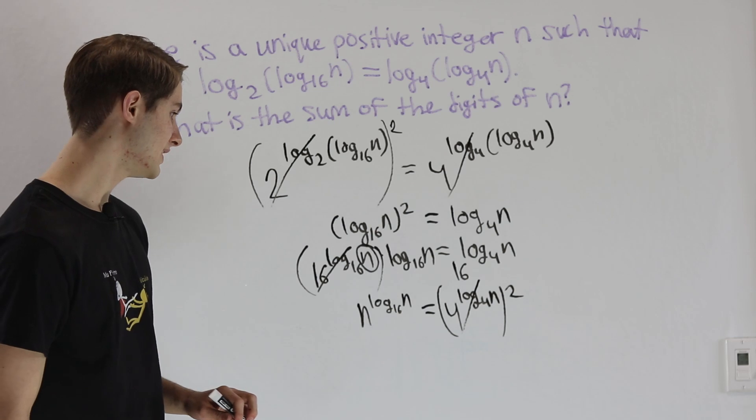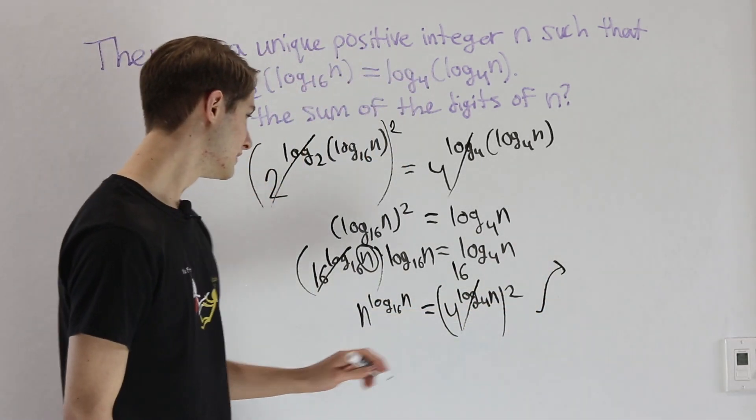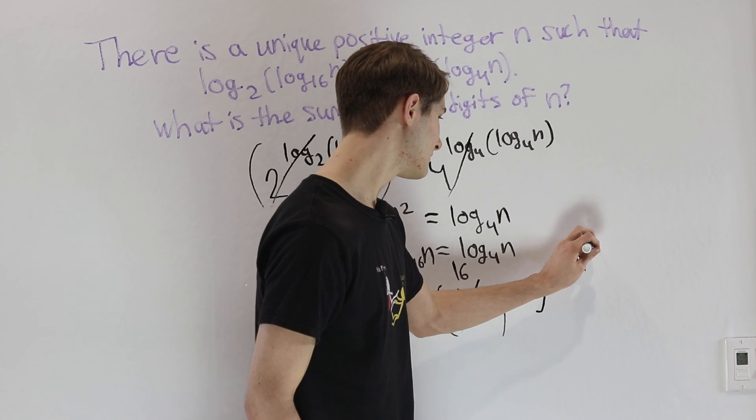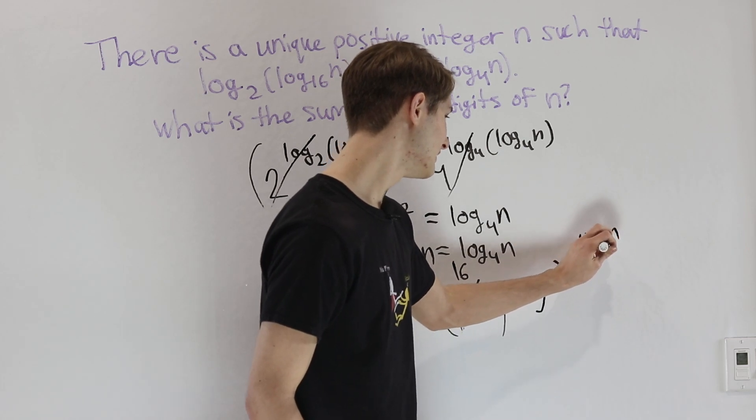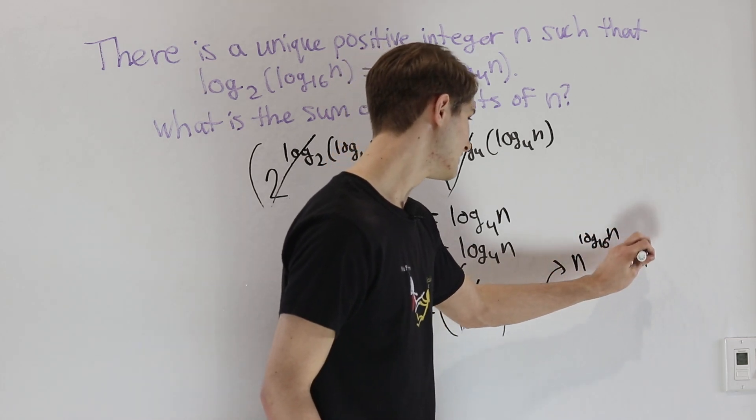4 and log base 4 cancel out, and that means we're going to get n to the log base 16 of n equals n squared.